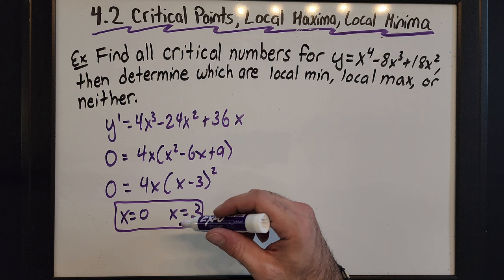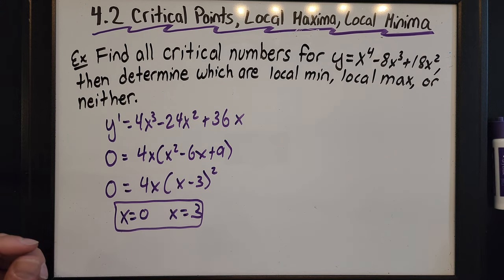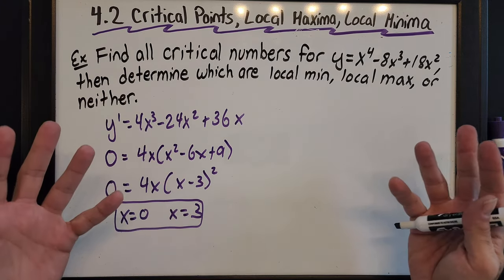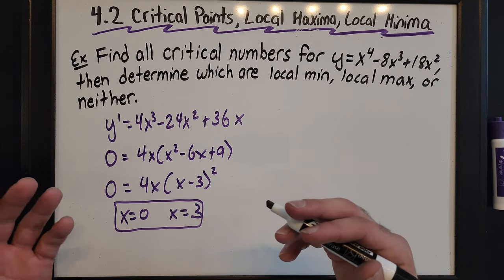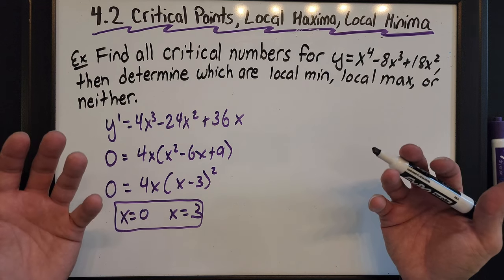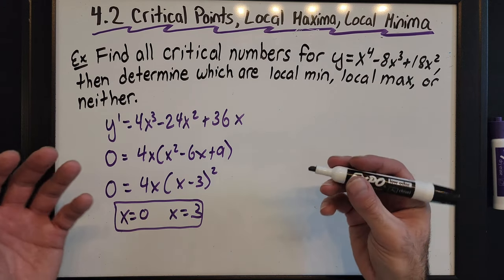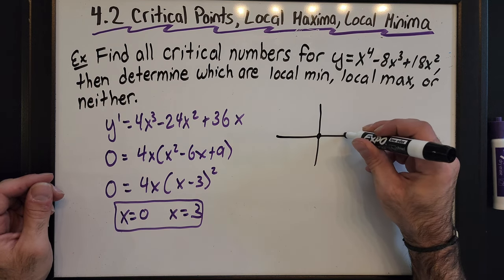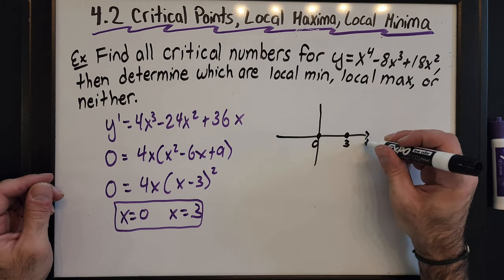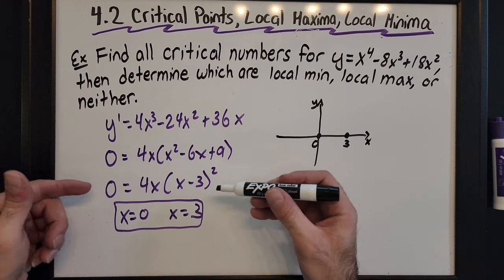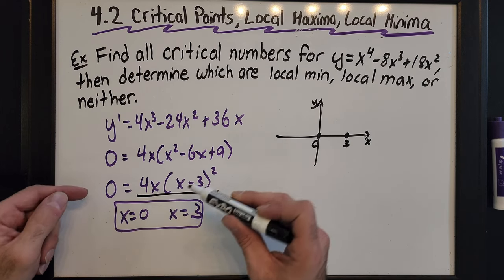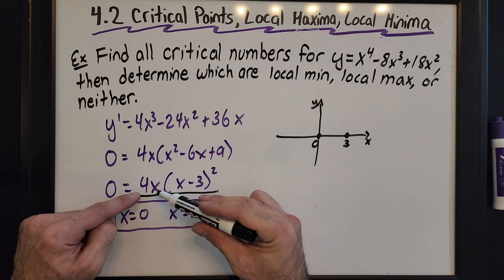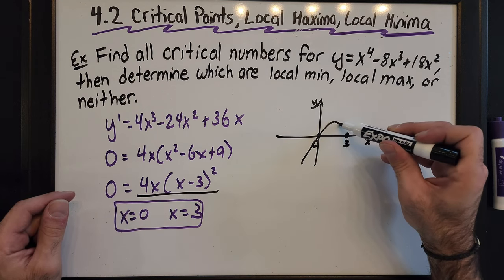Finding the critical numbers isn't enough to determine whether they're max or min. To figure this out, I don't use decision tables — I just graph the first derivative enough to know positive and negative intervals. I know something's happening at zero and something's happening at three, so I label those. This first derivative is a degree-three function with zeros at zero and three — it's a positive leading function.